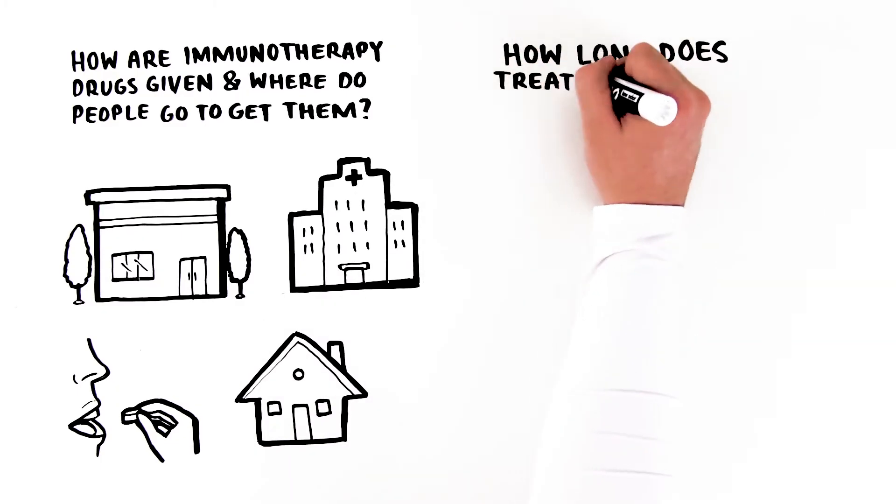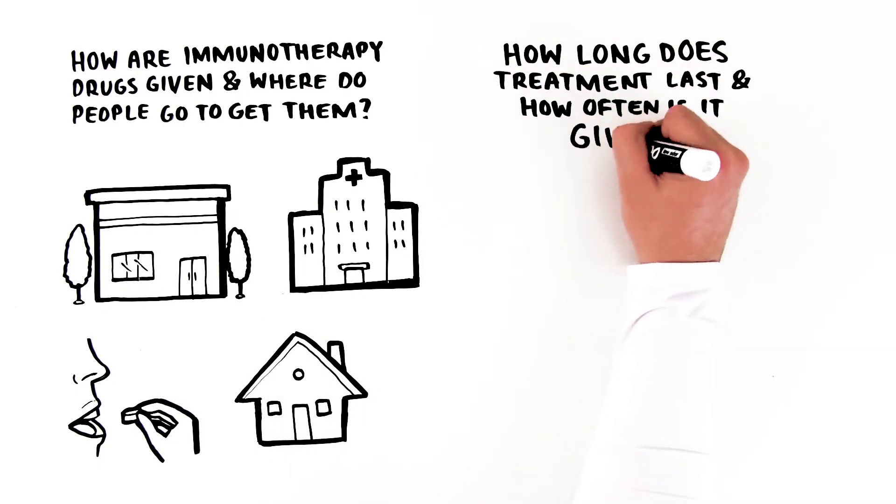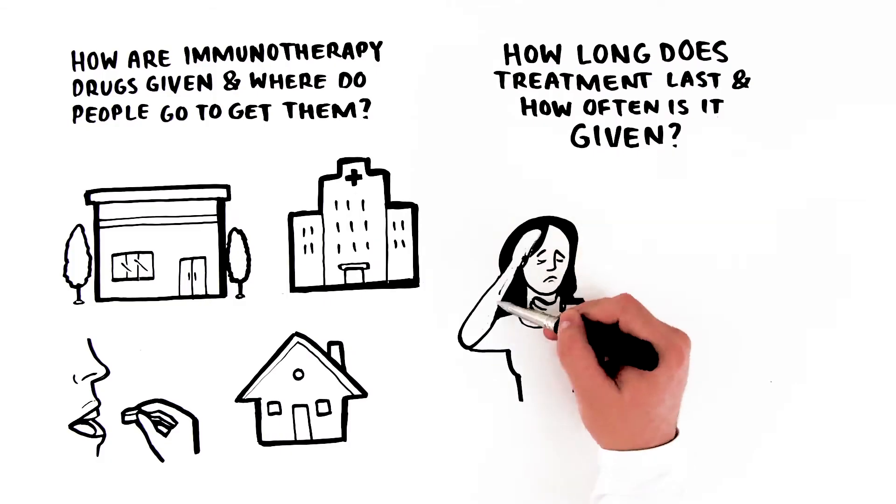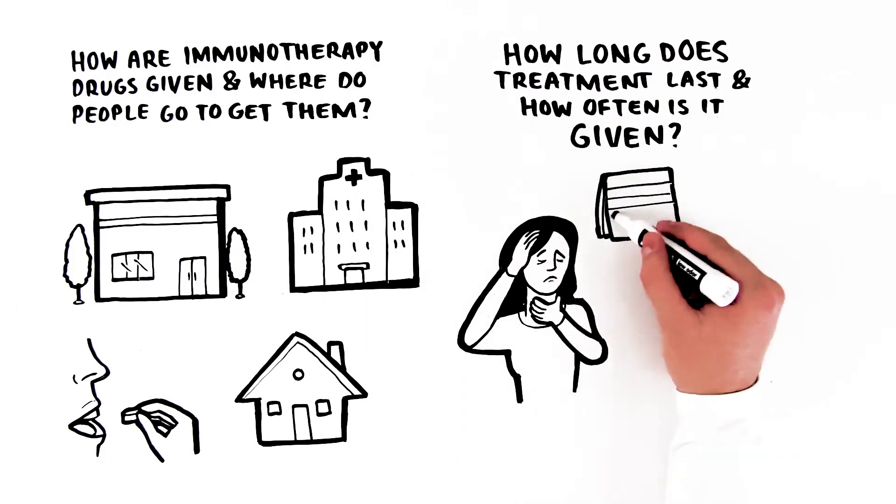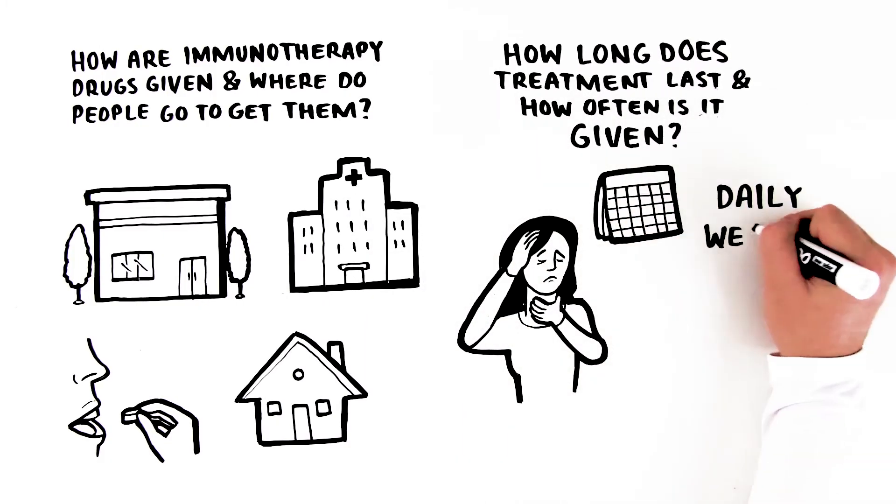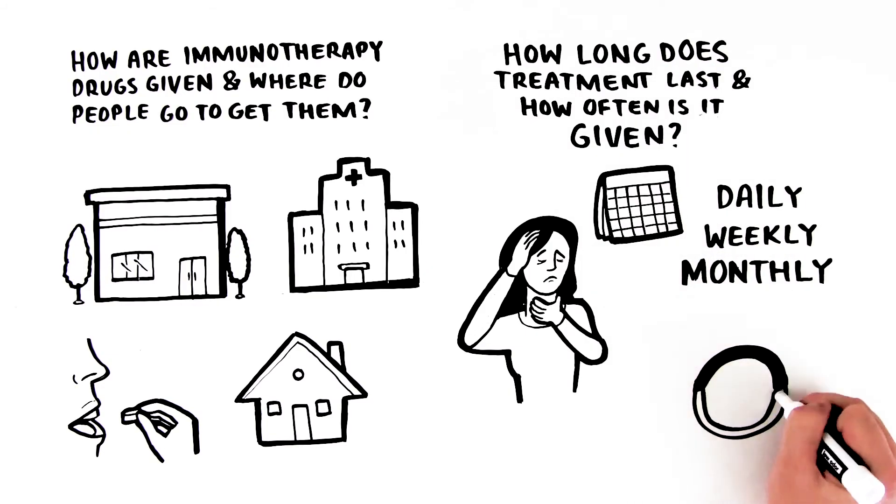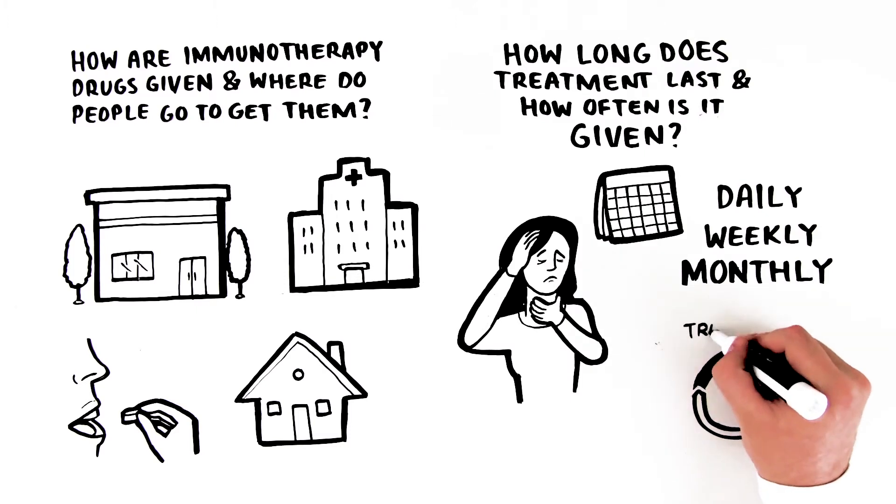How long does treatment last, and how often is it given? This depends on the type and stage of your cancer, the immunotherapy being given, and how your body responds to treatment. Treatment may be daily for a few days, weekly or monthly. Some types of immunotherapy are given in cycles, a period of treatment followed by a period of rest. The rest period gives your body a chance to recover.